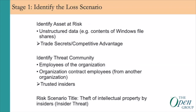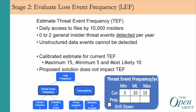Further on identifying the loss scenario specifics, we want to first identify what is the asset at risk. Its importance is that the data that could be exported would constitute trade secrets, which have the opportunity to possibly give competitive advantage to some other company. The threat community is these employees who are trusted insiders. The risk scenario title is 'theft of intellectual property by insiders,' or in shorthand, simply an insider threat case.